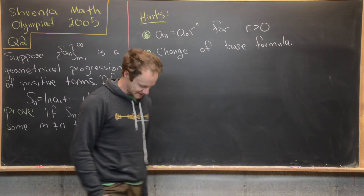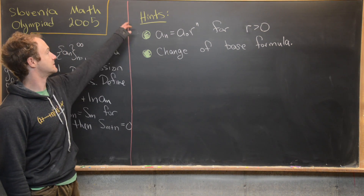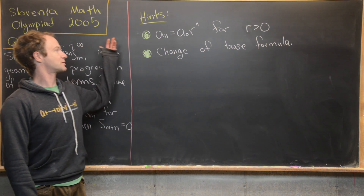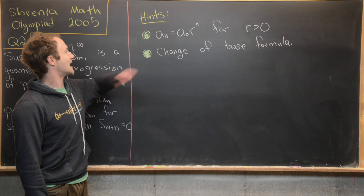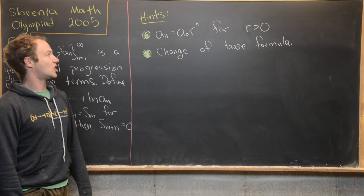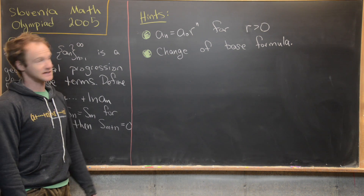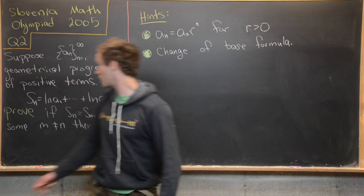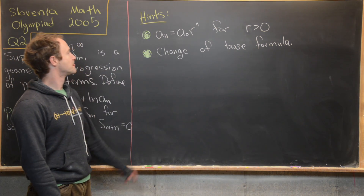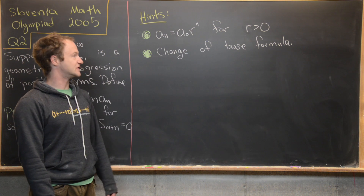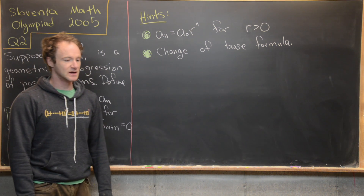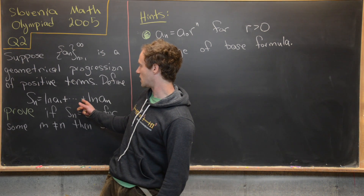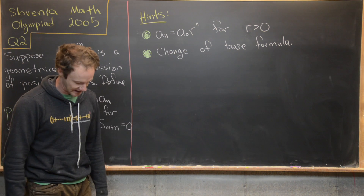I'm going to give some hints. The first hint is the definition of a geometric progression: a_n equals a₀ times r to the n, for some r greater than 0, and a₀ also greater than 0 since we want only positive terms. The second hint is to use the change of base formula for the logarithm so we can choose a nice base, since the natural log base can be exchanged for any other base.